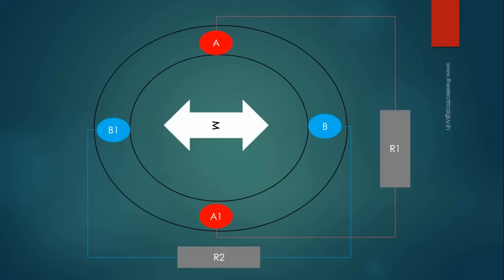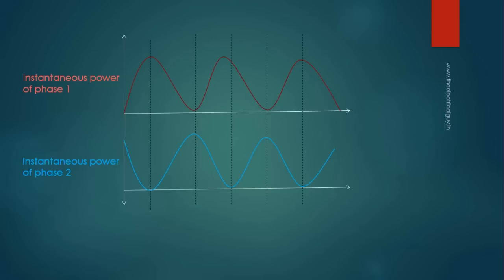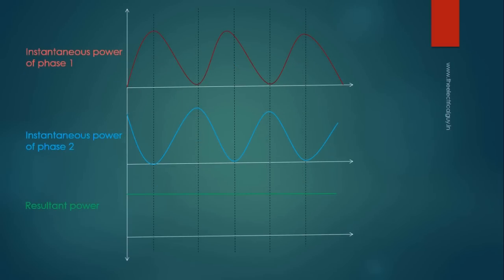The instantaneous power of both the resistors is as shown. Here you can notice that when the power output of resistor R1 is zero, power output of resistor R2 is maximum and vice versa. If we add instantaneous power of both the phases, we will find that the resultant power is constant and equal to the peak power PM of one phase. In simple words, the power output of two-phase generator is constant and better than single-phase generator.